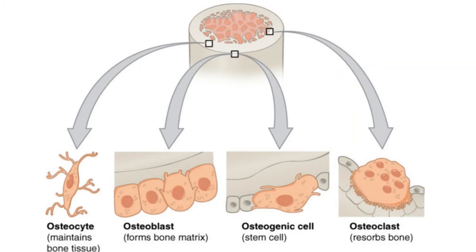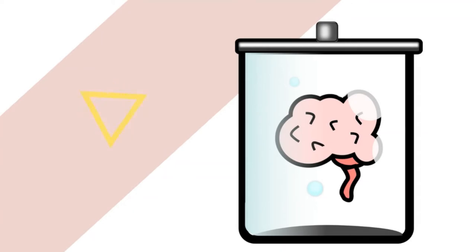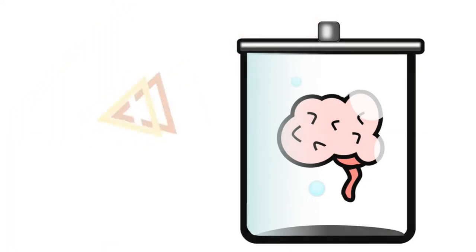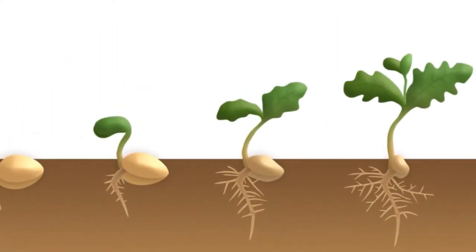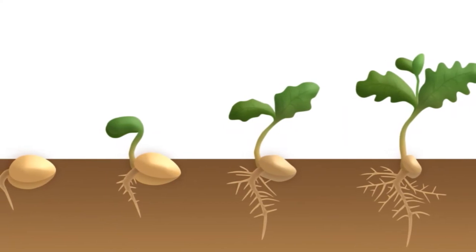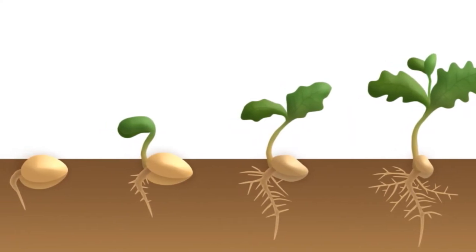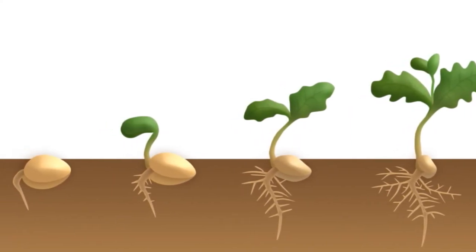We can also do the work of adult stem cells, and we can do the work of stem cells. When we're working with brain organoids, we're working on the brain organoids.